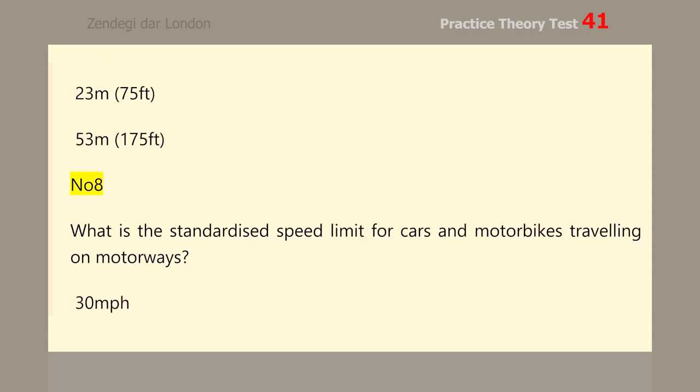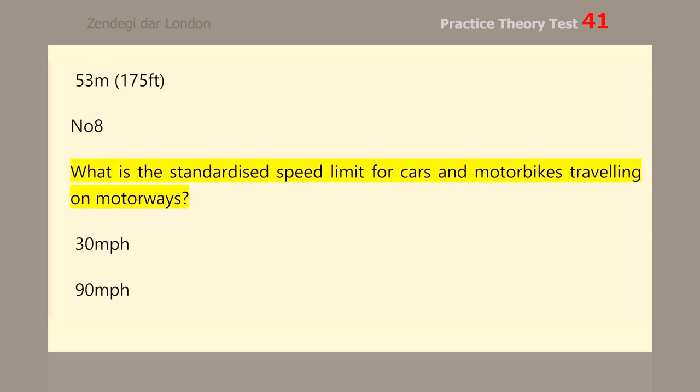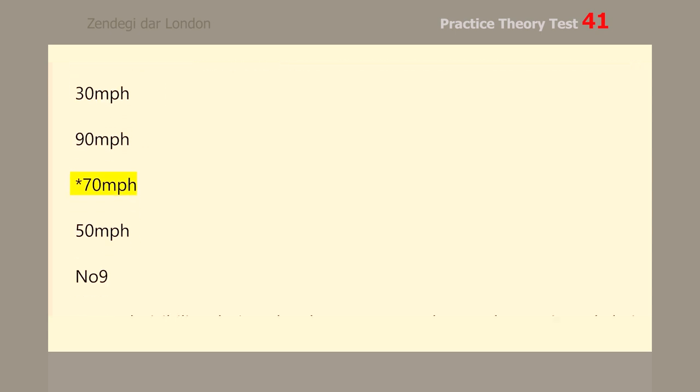Number 6. On average, what is the standardized speed limit for cars and motorbikes traveling on motorways? 70 mph.